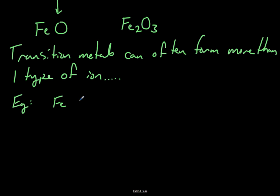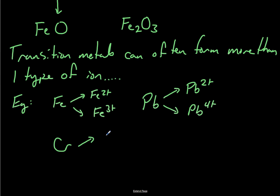So some examples. We've got iron, and we know it can form Fe2+, or Fe3+. There's also lead. Lead, it turns out, can form Pb2+, or Pb4+. Chromium is interesting. Chromium can either form a 3+, or a 6+. And a few ions even have more than just 2 possible ions that they form.